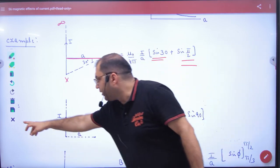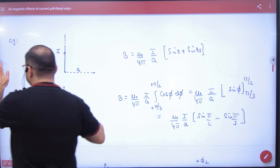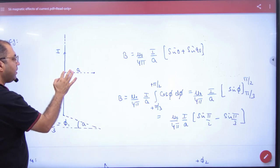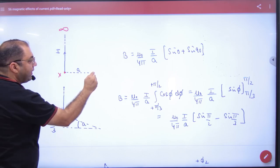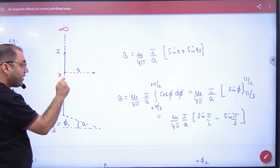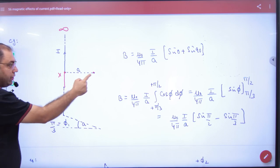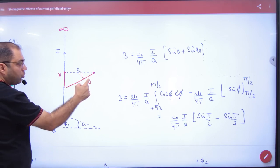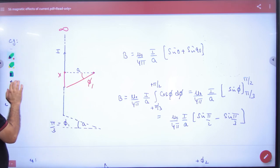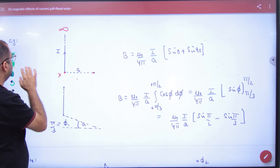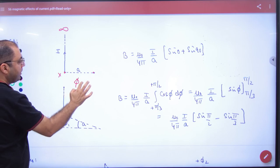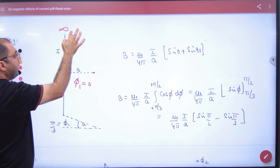Second case: if your wire starts from here, from point x, and goes to infinity, and you have to find B exactly here where the wire's portion is not below. If it is not below, then what angle phi1 will I take? Zero. So one angle is straight away zero.